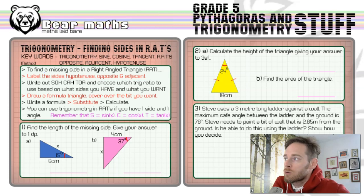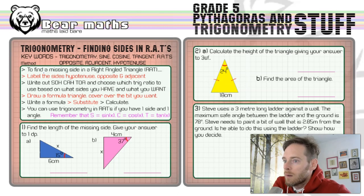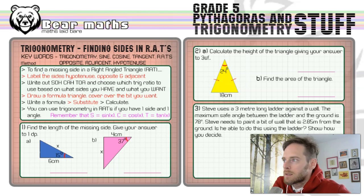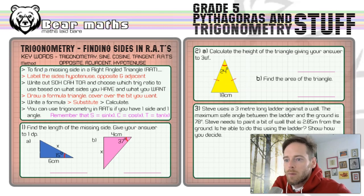Trigonometry is another branch of mathematics that allows you to work out the missing side length or the missing angle, depending upon what you've got within the question. Sine, cosine and tangent are the trig ratios, and they're the things we use to work out missing side lengths or missing angles. They're pre-programmed numbers in your calculator. RATs are right-angled triangles. Opposite, adjacent, and hypotenuse are the three sides of the right-angled triangle, and I'll go through which one's which within the questions.